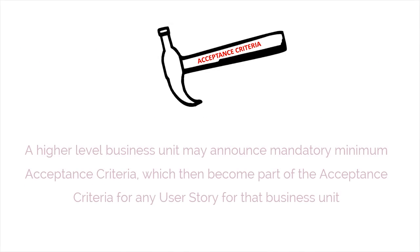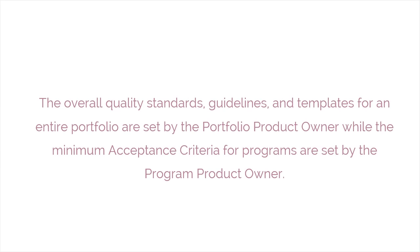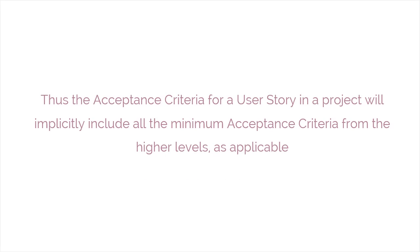A higher-level business unit may announce mandatory minimum acceptance criteria, which then become part of the acceptance criteria for any user story for that business unit. Any functionality defined by the business unit must satisfy these minimum acceptance criteria if it is to be accepted by the respective product owner. The introduction of this acceptance criteria may lead to a cascading set of acceptance criteria for the portfolio, program, and project. The overall quality standards, guidelines, and templates for an entire portfolio are set by the portfolio product owner, while the minimum acceptance criteria for programs are set by the program product owner. Thus, the acceptance criteria for a user story in a project will implicitly include all the minimum acceptance criteria for the higher levels as applicable.